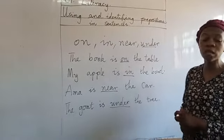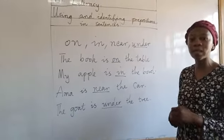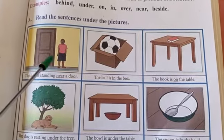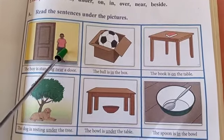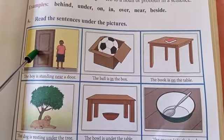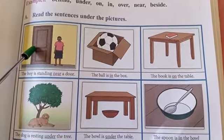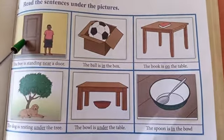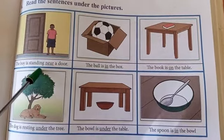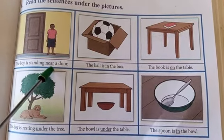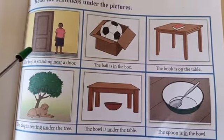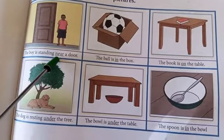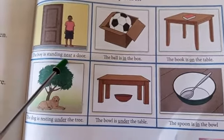Now let's look in our book and identify some of the prepositions used in sentences. From the book, we have a boy and a door — they are all nouns. What can you say about the boy and the door? You can say: the boy is standing near a door. So the preposition there is 'near', and you can see 'near' has been underlined.